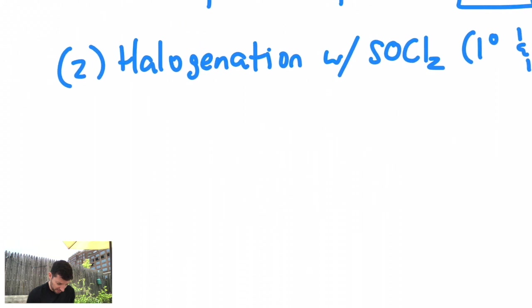So if I have, let's say, ethanol, and I react this with SOCl2, thionyl chloride, it substitutes the OH for chlorine. How does it happen?